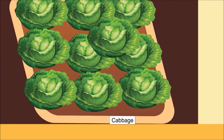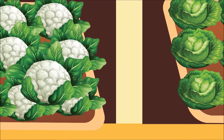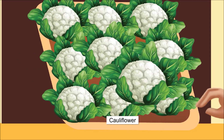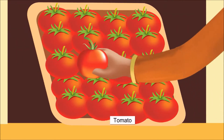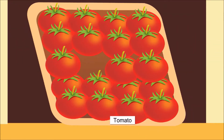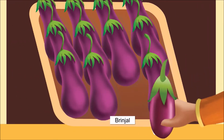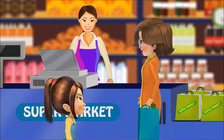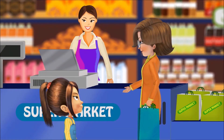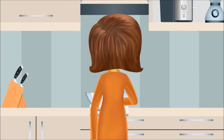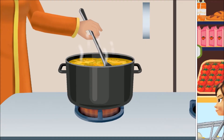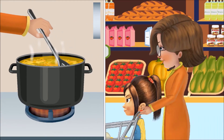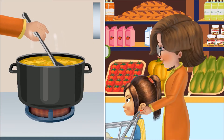Spinach, cabbage, cauliflower, tomatoes, and brinjels. Alicia, we are done with our shopping, come let's go home. Just like Alicia's mother, we all see our mothers buying and cooking different vegetables.